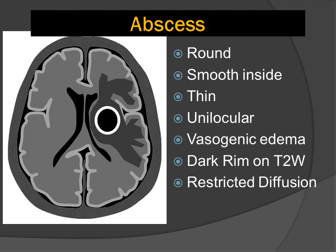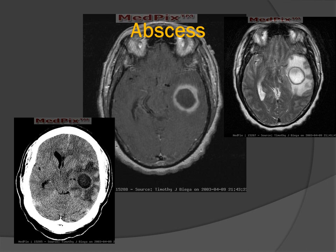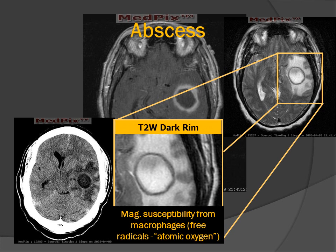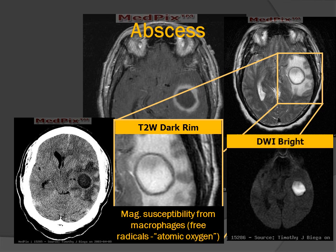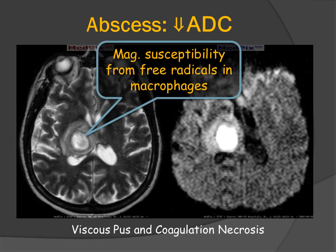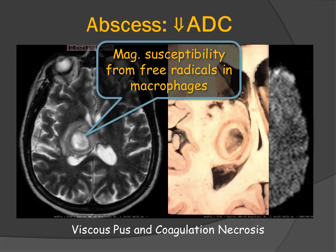Abscesses are usually round and smooth with a thin rim, unilocular, with surrounding vasogenic edema that is typically very extensive. The rim may be hypointense on T2, and there will be restricted diffusion on diffusion-weighted imaging or ADC map. Abscesses characteristically have a smooth inner margin because pathologically we are looking at the rim of granulation tissue surrounding the pus and coagulation necrosis. The hypointensity of the rim is due to macrophages that have free radicals or atomic oxygen. Looking at this pathologic example, we can see a very smooth margin and the white cell mass and coagulation necrosis in the center.